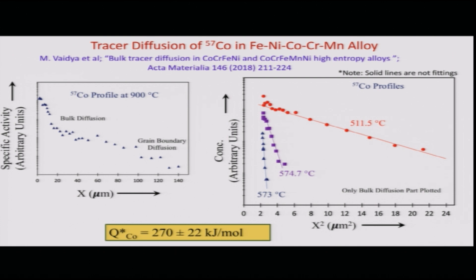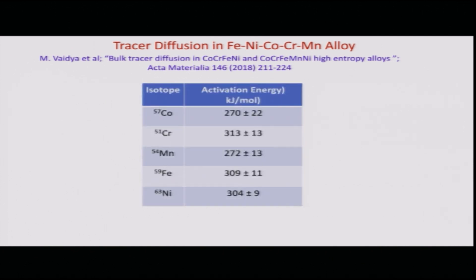They also conducted tracer experiments for each constituent element in this quinary system, using cobalt-57, chromium-51, manganese-54, iron-59, and nickel-63 isotopes. The activation energies for all elements are listed. The activation energy of cobalt is the lowest, whereas the activation energy for diffusion of chromium is the highest. These are some of the examples from the literature on determination of self or impurity diffusion coefficients by the tracer technique. In the next class, we will talk about interdiffusion.